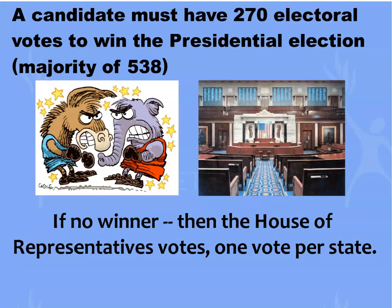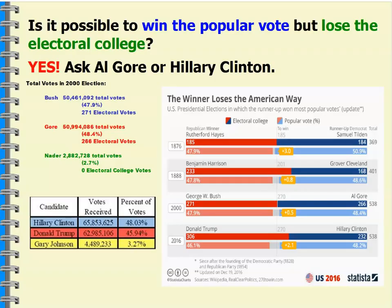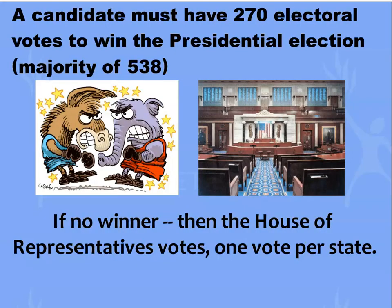If there isn't a winner, according to Article 2 of the U.S. Constitution, the House of Representatives would vote for president — one vote per state. That's interesting, because even though we currently have a Democratic House, one vote per state means the majority of states are actually Republican. So we'd probably end up with a Republican president. The Senate would then choose the vice president per the Constitution.